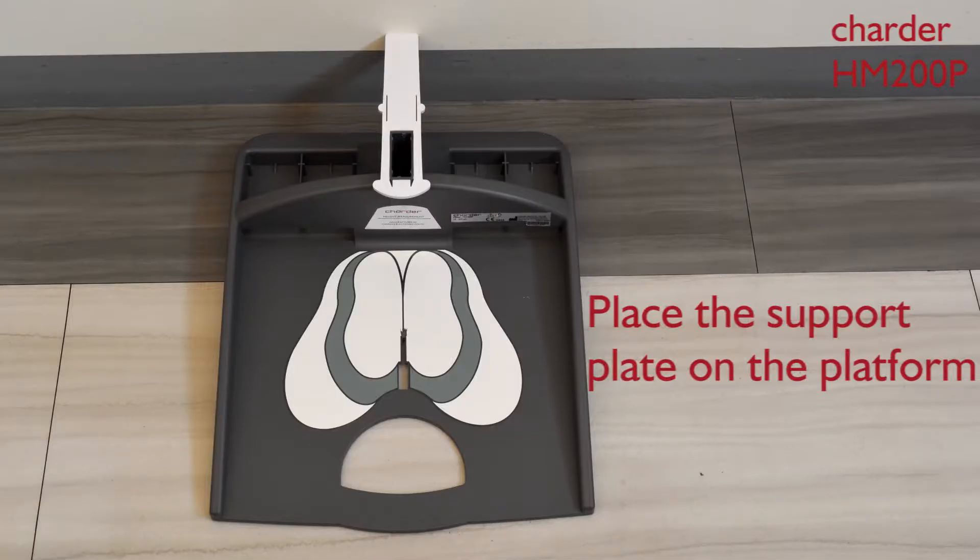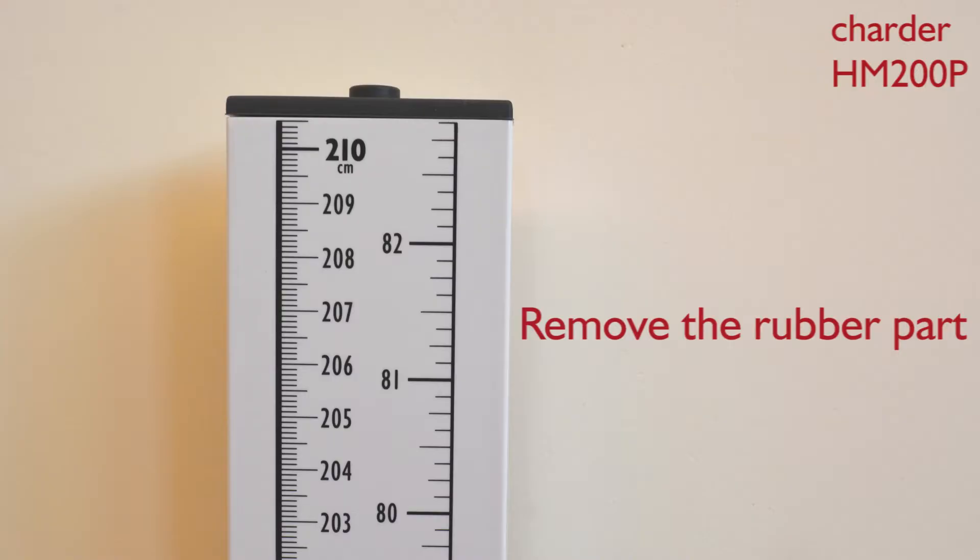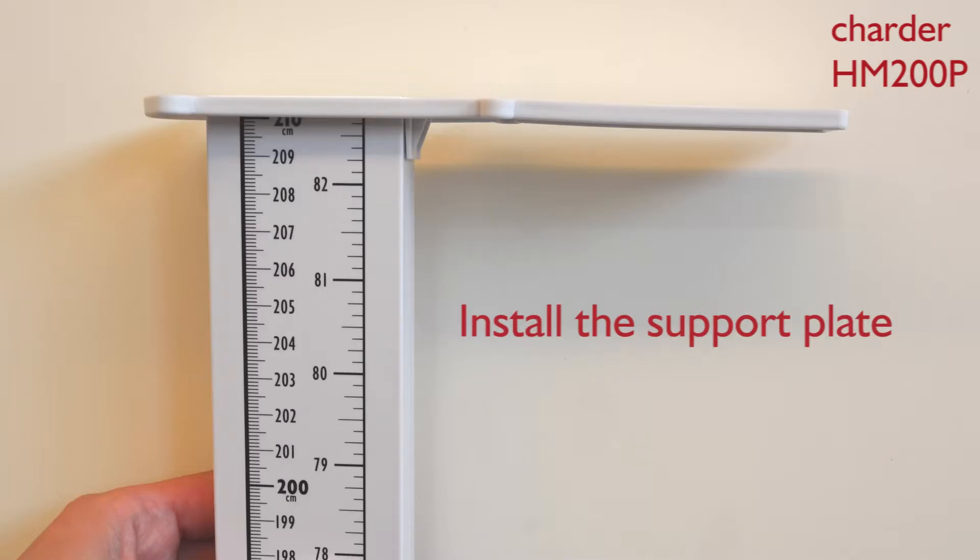Example assembly procedures. Take out the measuring rod which is showing 210 cm. Removing the rubber cover on the top.